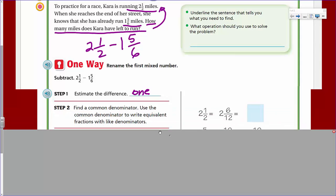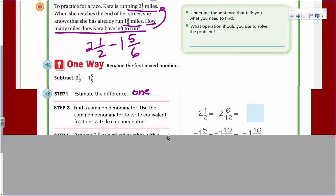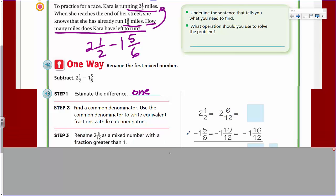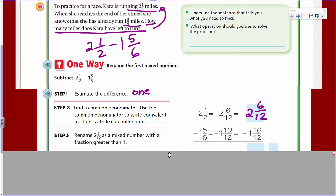Okay, now we have step two. Find a common denominator. Use the common denominator to write equivalent fractions with like denominators. It just seems like we've done this before. When we look at this, I don't know how much they're going to provide for us here, so let's just take a look. So here you can see we have 2 1/2. And this says, it tells us, it's equal to 2 6/12.